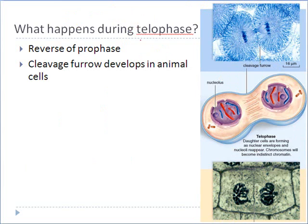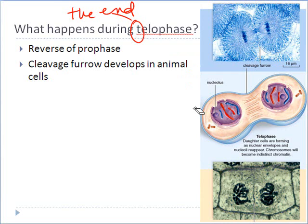The last event in mitosis is telophase — T for the end. Everything that happened in prophase, the reverse of it happens in telophase. In prophase the nuclear envelope disappeared — in telophase it reappears. In prophase the nucleolus disappeared — in telophase it reappears. In prophase spindle fibers started to form — in telophase all of those spindle fibers go away. In prophase chromatin condensed to become visible chromosomes — in telophase they begin to uncondense and go back to chromatin. If you know what happened in prophase, just do the opposite and you're explaining telophase.